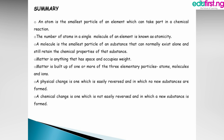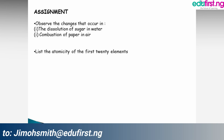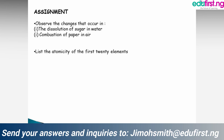In summary: an atom is the smallest particle of an element that can take part in a chemical reaction. The number of atoms in a single molecule of an element is known as atomicity. A molecule is the smallest particle of a substance that can normally exist alone and still retain the chemical properties of that substance. Matter is anything that has mass and occupies space, and is made up of atoms, molecules, and ions. A physical change is easily reversed and no new substances are formed, while a chemical change produces new substances and cannot be easily reversed. Thank you for this class — I hope you learned something new, and I have listed some assignments for you.